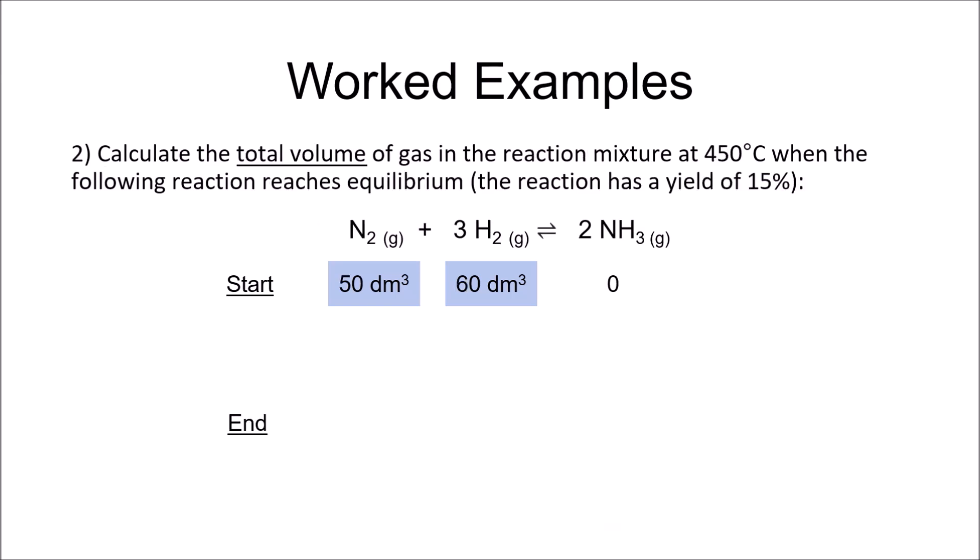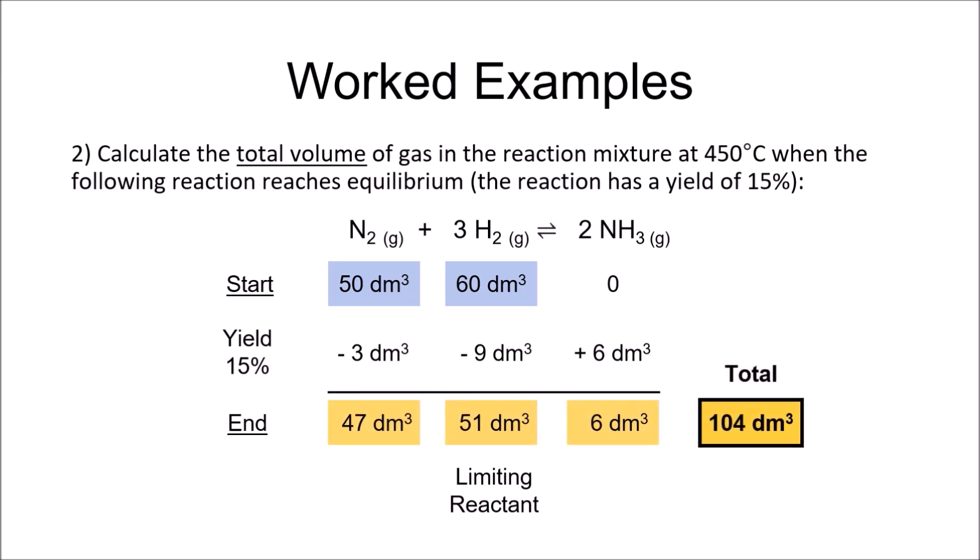Now this question is as unpleasant as they can get. Similar question to the previous one, but with an equilibrium thrown in. You may recognise this reaction from the Haber process, which has a yield for the forward reaction of around 15%. First, we should establish that the limiting reactant is the hydrogen. However, only 15% of it is used up, so 9 cubic decimetres are removed from the total, besides 3 of nitrogen, producing 6 cubic decimetres of ammonia. Add the volumes up to get the total volume of gas in the reaction mixture after reaching equilibrium. Impressed? Kinda hard not to be. Please feel free to replay this example and take your time to enjoy it properly.